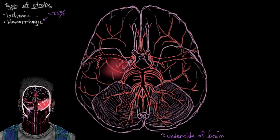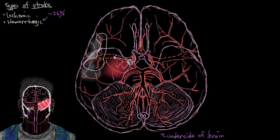Another thing to consider: all of that blood leaking out of the vessel is blood obviously not continuing through the vessel to downstream vessels that serve downstream parts of the brain. So you'll start to have brain tissue die off in that distribution.